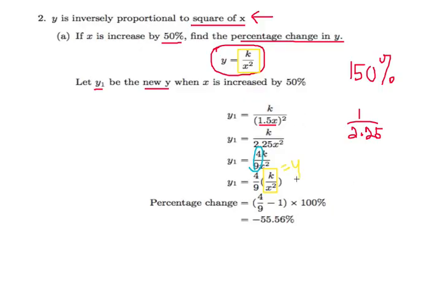So now you have y1 equals 4 over 9 of the old y. If you think about it, it's smaller than the old y, correct? Therefore, your answer has to be a negative percentage change because it's a decreasing percentage change.